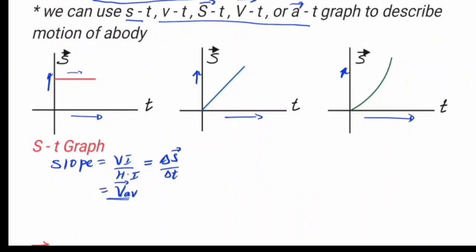If you calculate the slope, the slope is the same as velocity. Graph B shows that displacement is not changing through time — the displacement does not change as time counts forward.